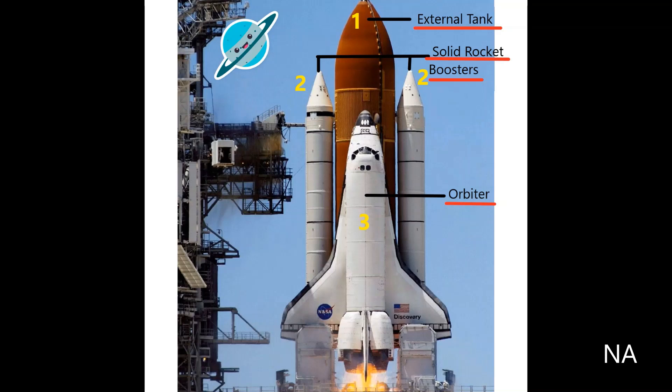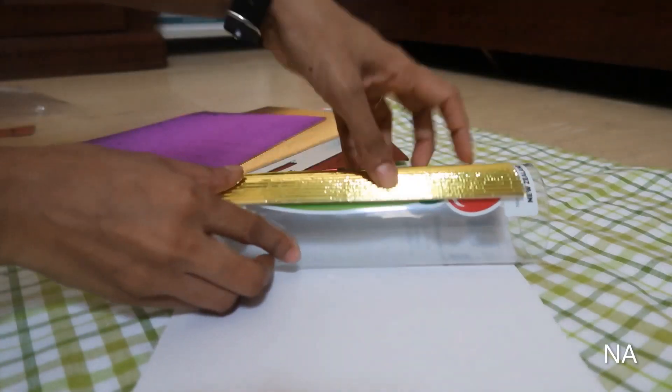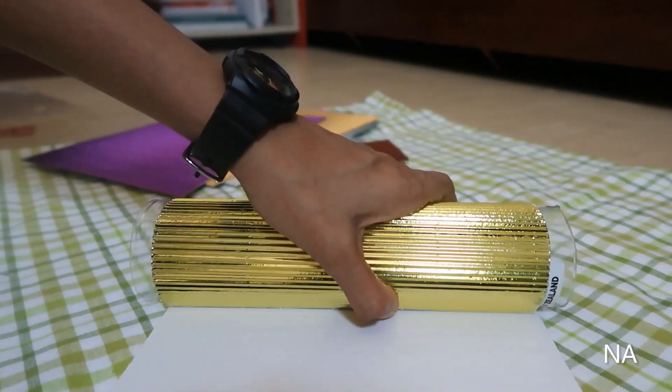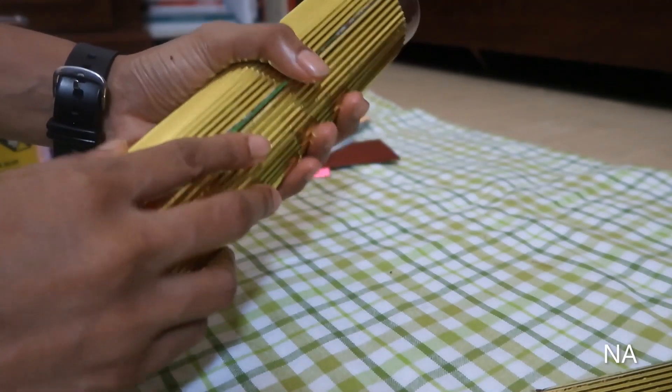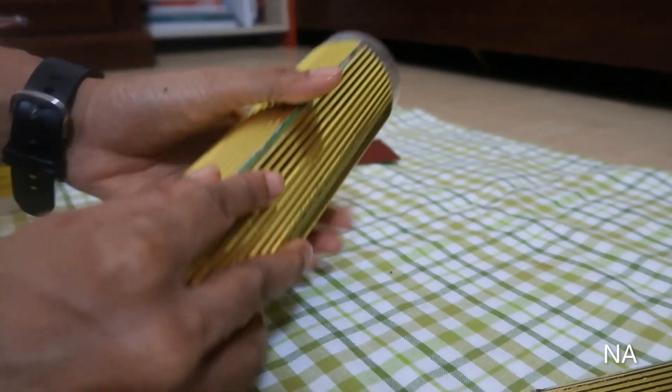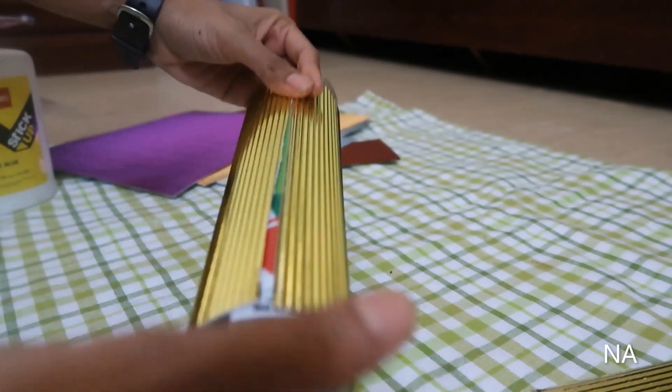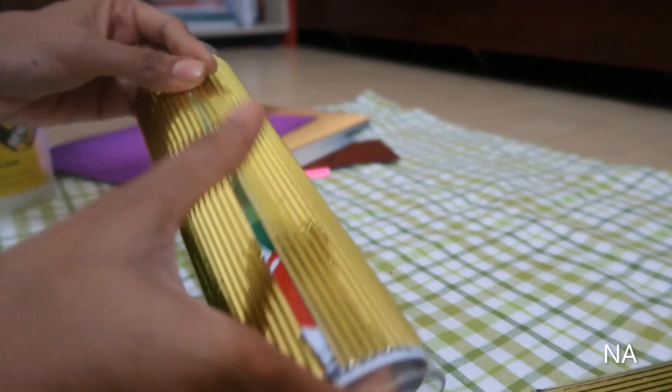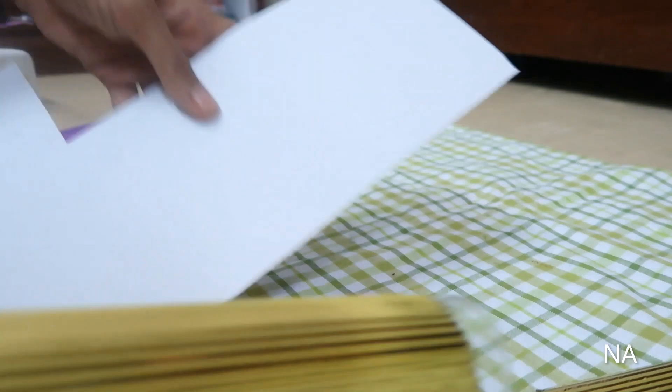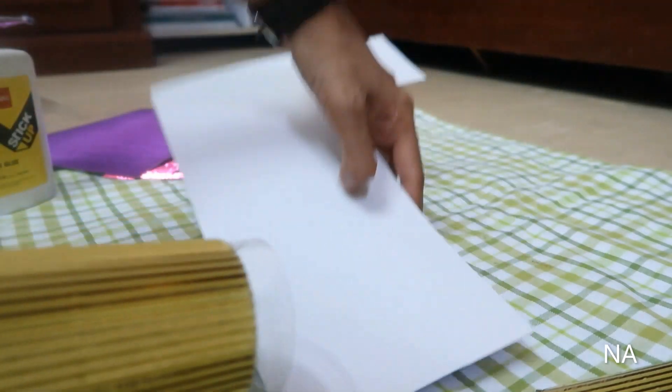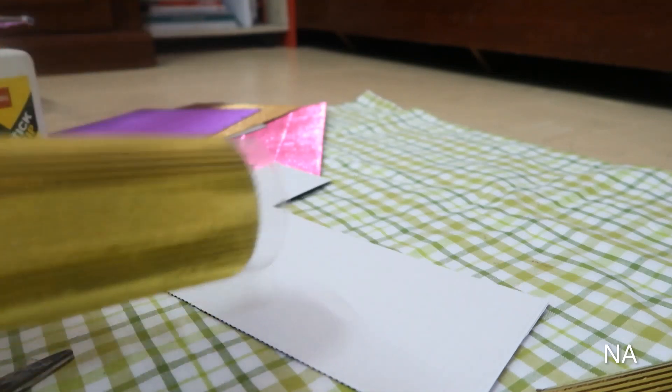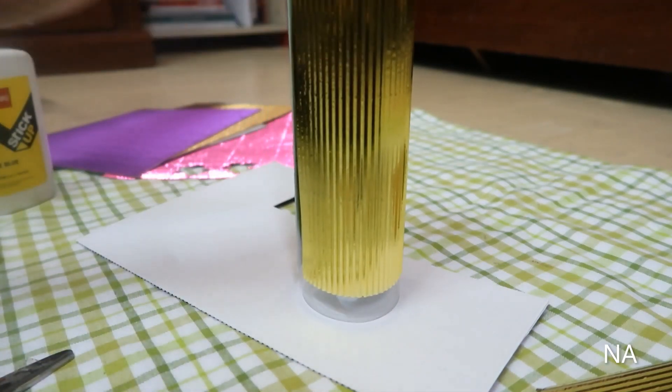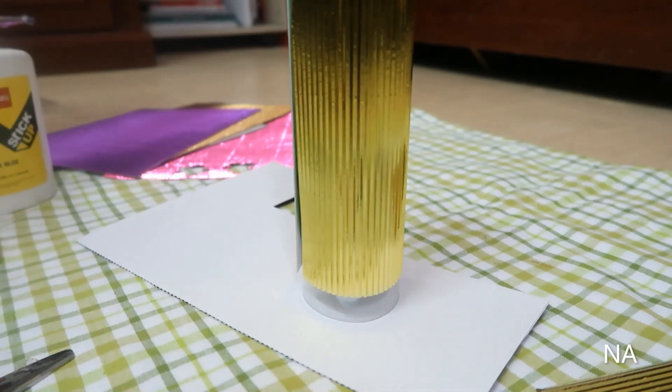So first we will be making the external tank. For that I have taken a bigger size cylinder shape and we will be wrapping the glazing paper around with the help of glue. After sticking on the glazing sheet, take your preferred color sheet, place the cylinder and trace out the circle. This is just to get the measurement for our top part.